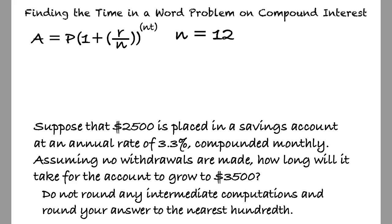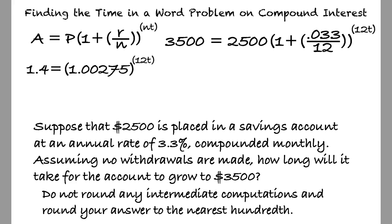Substituting these values into the equation yields 3,500 equals 2,500 multiplied by 1 plus 0.033 over 12, all raised to the 12t power. Simplifying this equation yields 1.4 equals 1.00275, all raised to the 12t power.